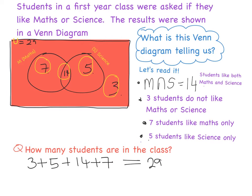So what we looked at there is reading a Venn diagram. We were given a Venn diagram and asked: what does it actually mean? We can figure out that 14 students like maths and science, three students do not like maths or science, seven students like maths only, and five students like science only. And I can also calculate exactly how many are in the class — that gives me 29. That's how we read a Venn diagram and extract information from it.